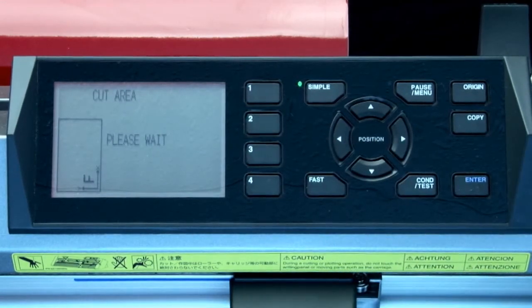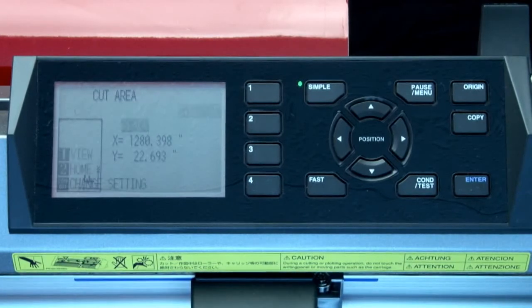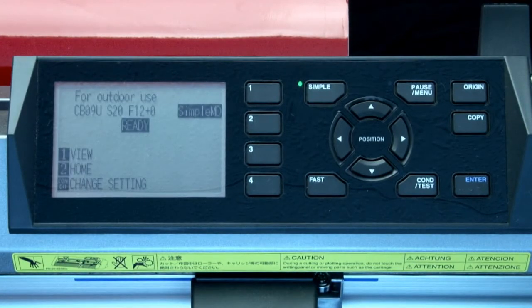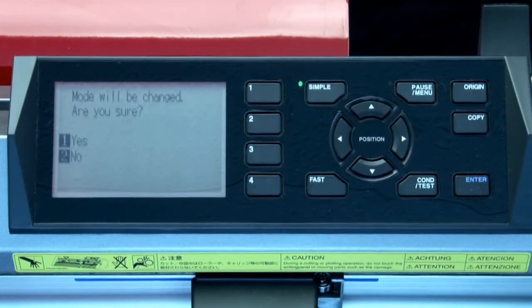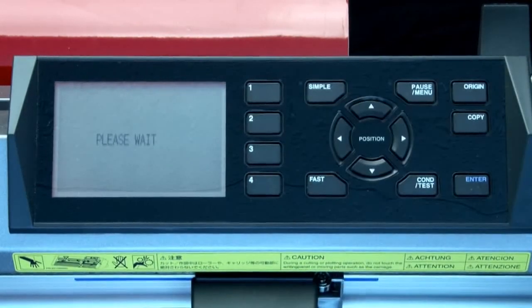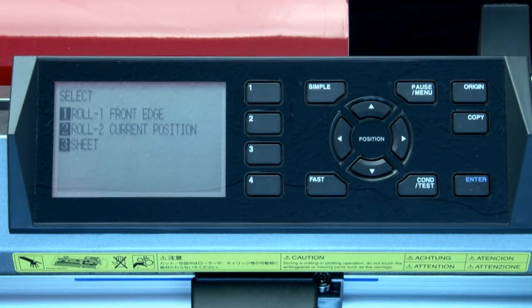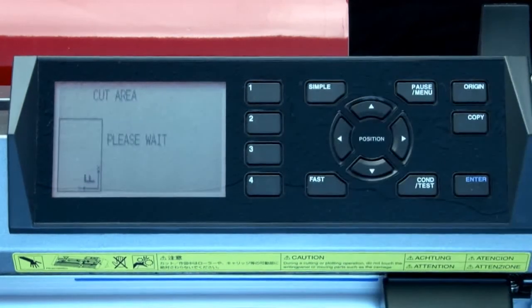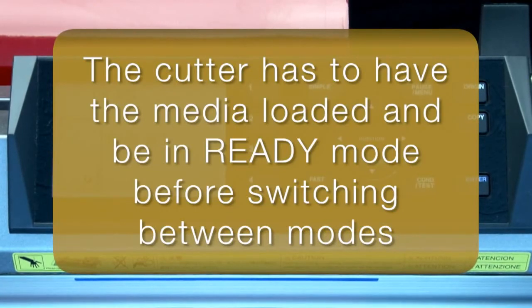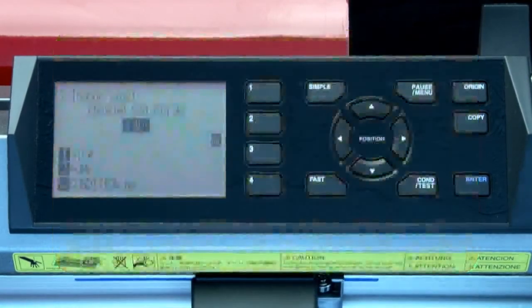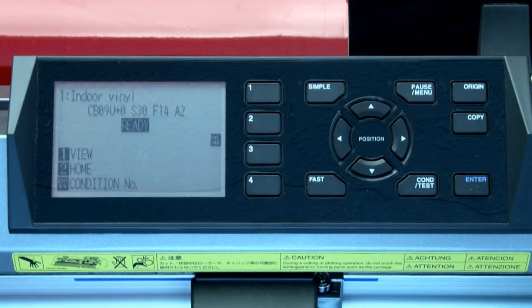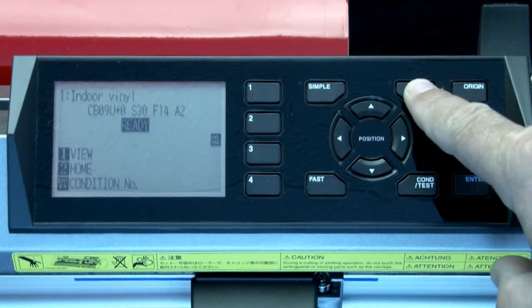For this training video, we will keep the menu in normal mode so we can have access to all the menu options. To switch back, press the simple button again, press the one key for yes, and then initialize the cutter by pressing roll two. Note that the plotter has to have media loaded and be in ready mode before switching to simple or normal modes.